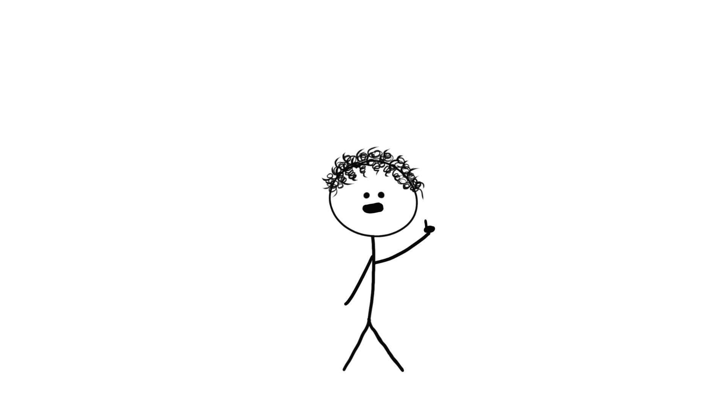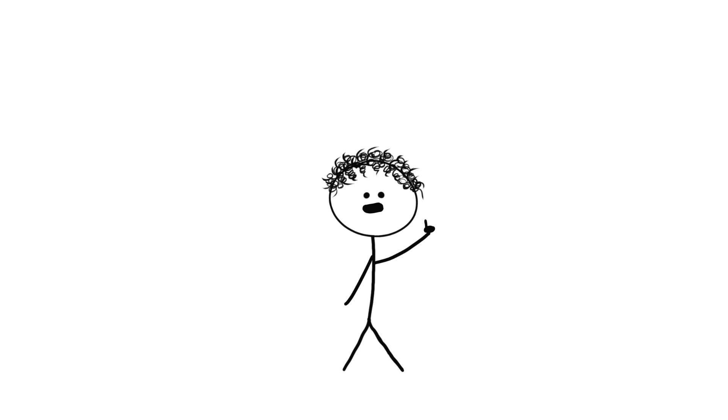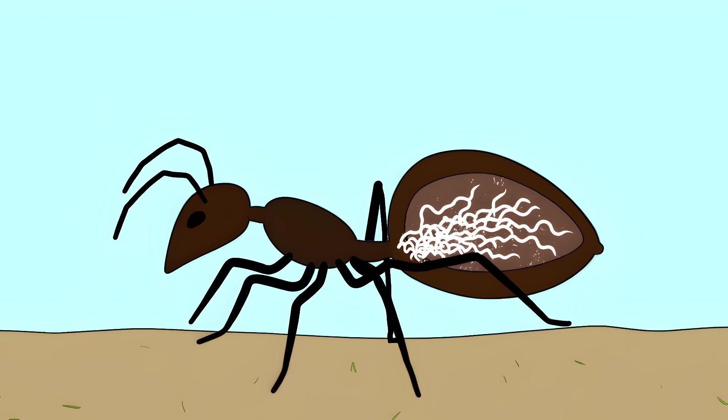Currently, this fungus can't infect humans because we're too warm for it. But scientists say fungi are evolving faster than ever. They're adapting to warmer temperatures, getting closer to our body temperature. And since it already knows how to control nervous systems, this isn't some made up movie plot.